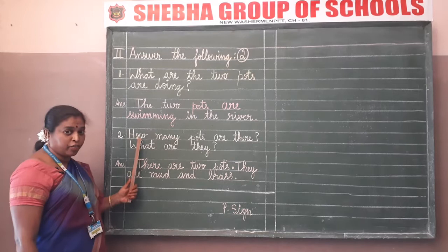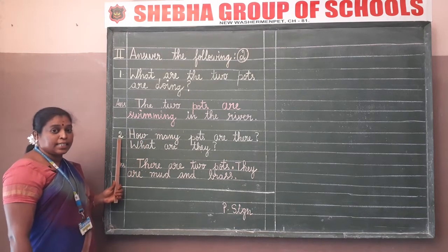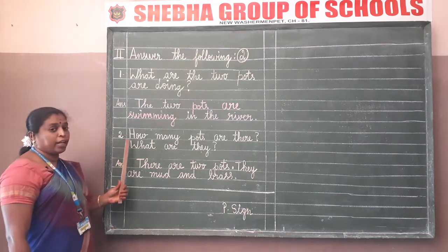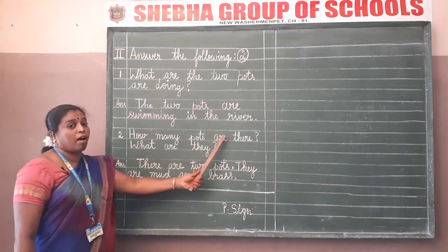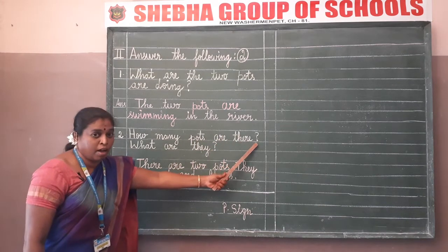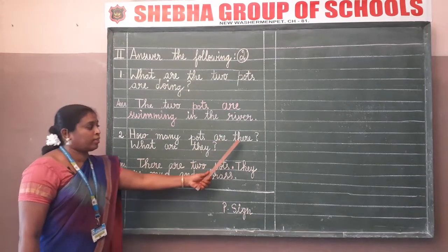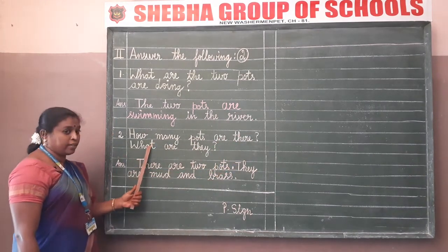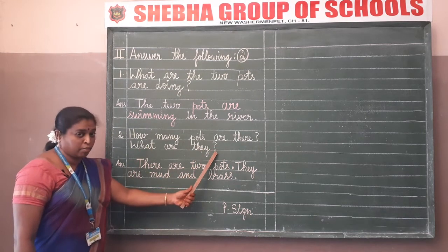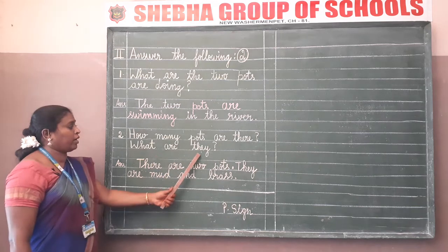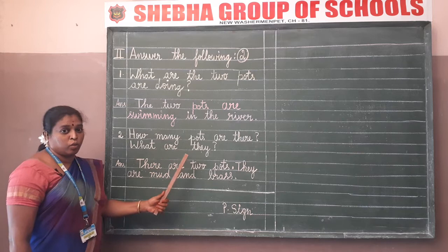Swimming. Start writing from the next line. Now write the serial number inside the margin. The question: 'How many pots are there?' Question mark. 'What are they?' Question mark. So the two questions are: how many pots are there, and what are they?